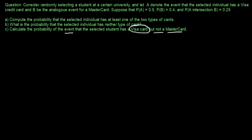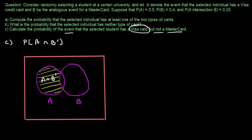In part C, we have to calculate the probability that the selected student has a Visa card but not a MasterCard — meaning event A should happen but event B should not. We need to calculate the probability of A intersection B complement. To find this, let's represent the event in a Venn diagram. From the Venn diagram, A intersection B complement is the shaded region, and we can see we need to subtract the probability of A intersection B from the probability of A.